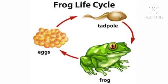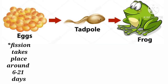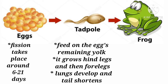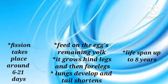A female frog lays jelly-like eggs in water or places near bodies of water. Cell division takes place until the embryo develops into a tadpole around 6 to 21 days. Once the egg hatches, a tadpole comes out, looking like a small fish with a tail and gills for breathing in water. It feeds on the egg's remaining yolk. After five weeks, it grows hind legs and then forelegs. The lungs develop and the tail shortens. From 12 to 16 weeks, the adult frog develops, and its lifespan can be up to 8 years.